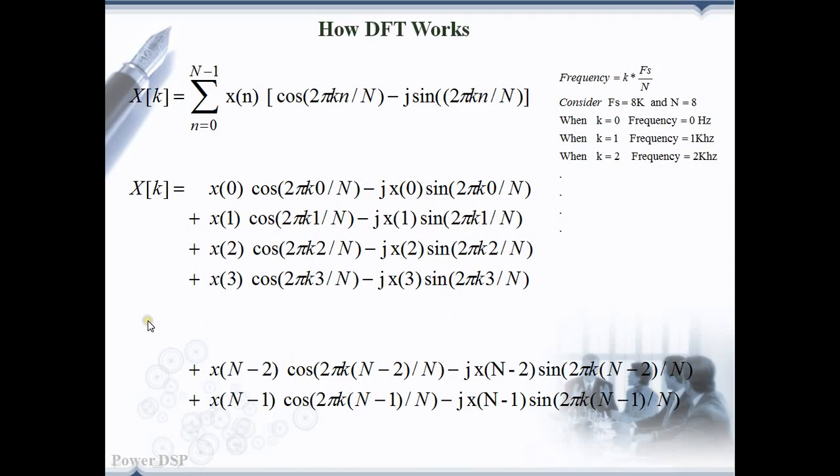If it presents, then it will give the value of the amplitude. If the 2 kilohertz component is not present in the input signal, then there is no correlation between the input samples and the sinusoids of 2 kilohertz. So 0 will be the output.